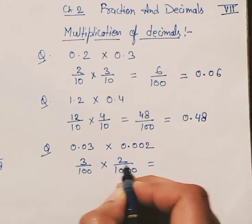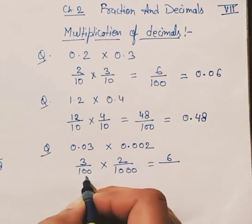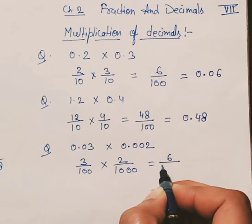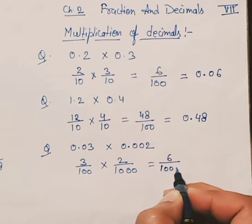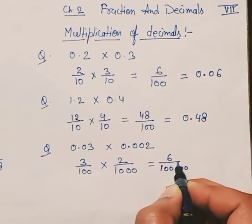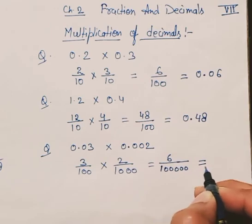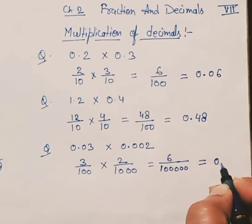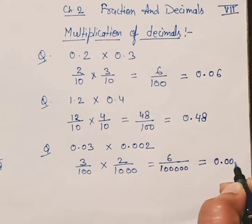Now multiply these two: 3 times 2 gives you 6, and 100 times 1000 gives you 100,000—five zeros total. Convert into decimal, so we have the answer which is 0.00006.